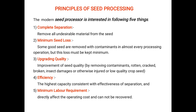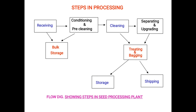These are the steps in the processing shown in the flowchart. The first step is receiving. After receiving, you go directly for conditioning and pre-cleaning of the seeds, or alternatively go to bulk storage. After conditioning and pre-cleaning, the next step is the cleaning operation.